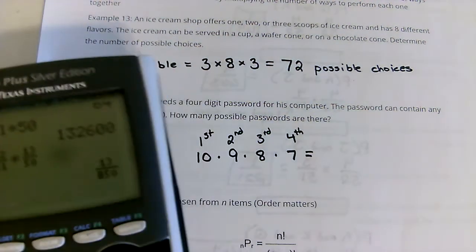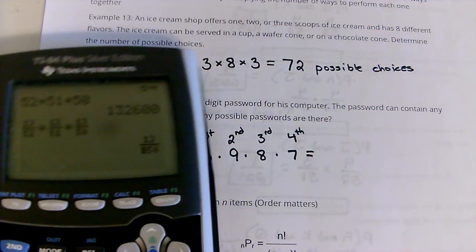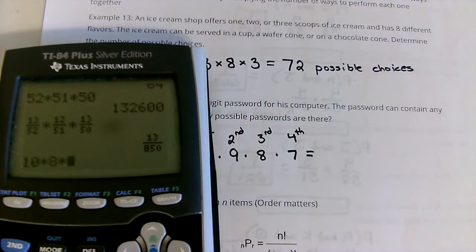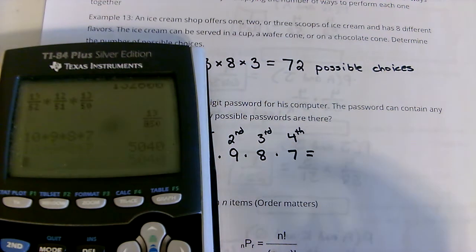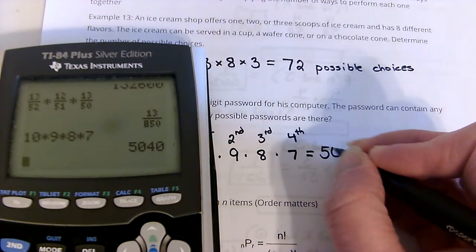So, ten times nine times nine times eight times seven, and that's 5,040.